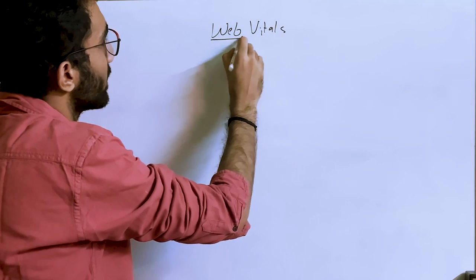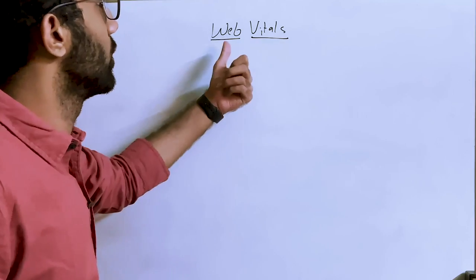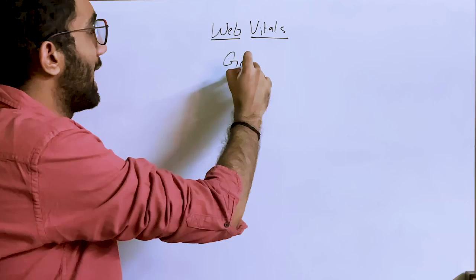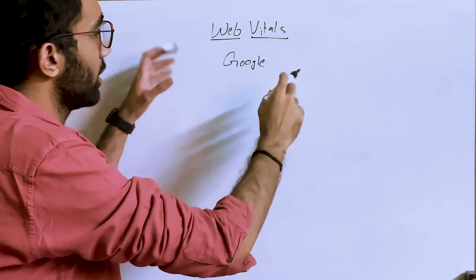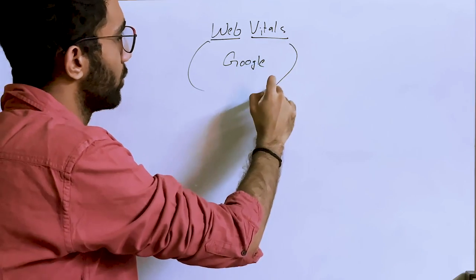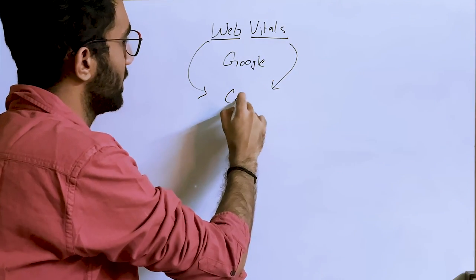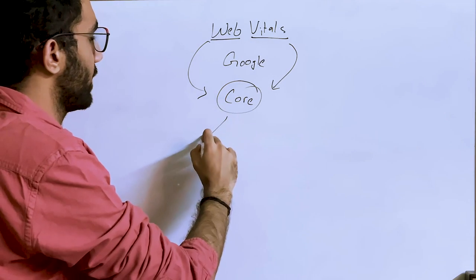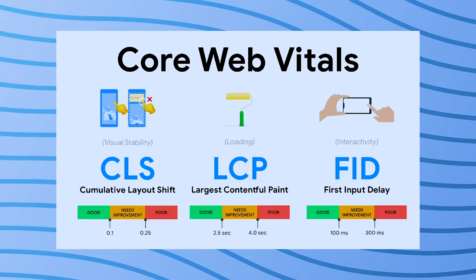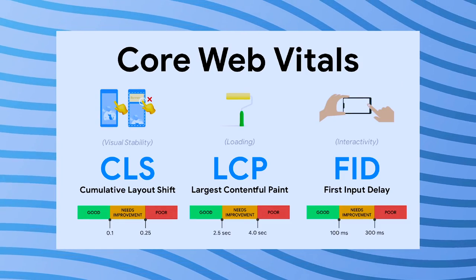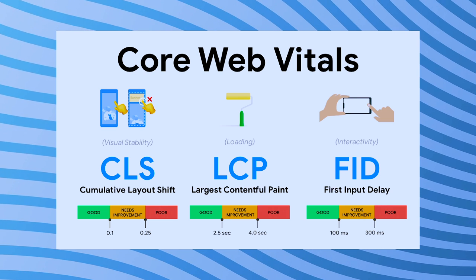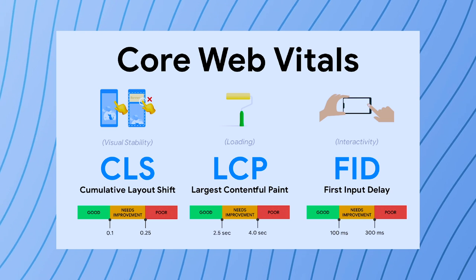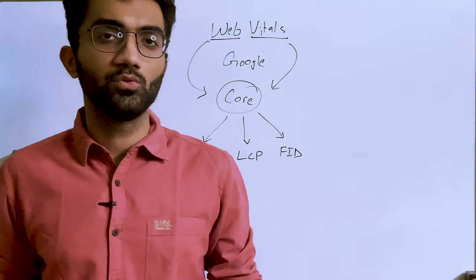As the name suggests, we're talking about web vitals — something important about the web. Web vitals are a few metrics defined by Google, and out of all of them, a few are called Core Web Vitals. These Core Web Vitals are: CLS (Cumulative Layout Shift), LCP (Largest Contentful Paint), and FID (First Input Delay).